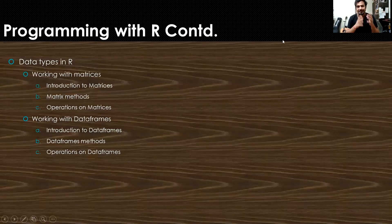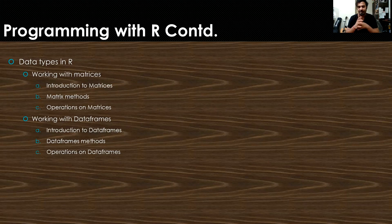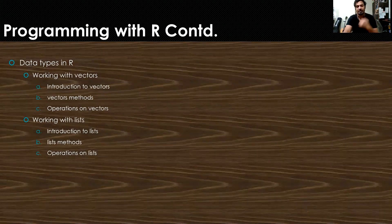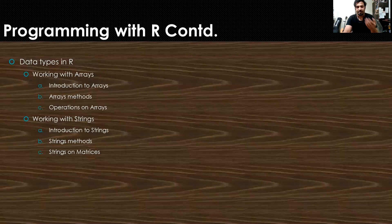Then we'll talk about the data types in R — the different data types present such as matrices, vectors, data frames, lists, and strings. We'll talk about each of these data types individually, the different methods present with them, and how we can perform multiple operations on all of these data types, including matrices, data frames, vectors, lists, arrays, and strings.